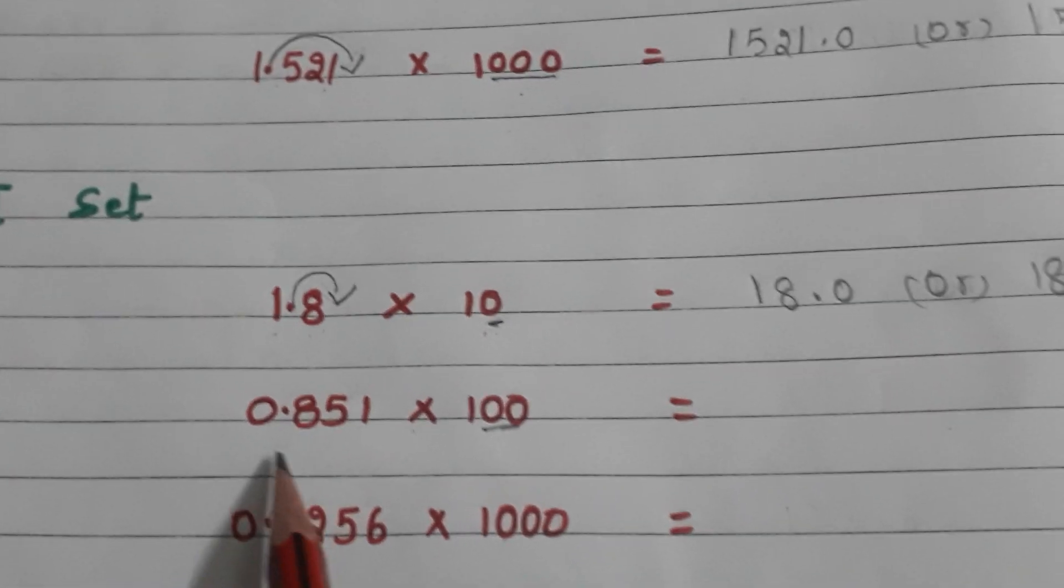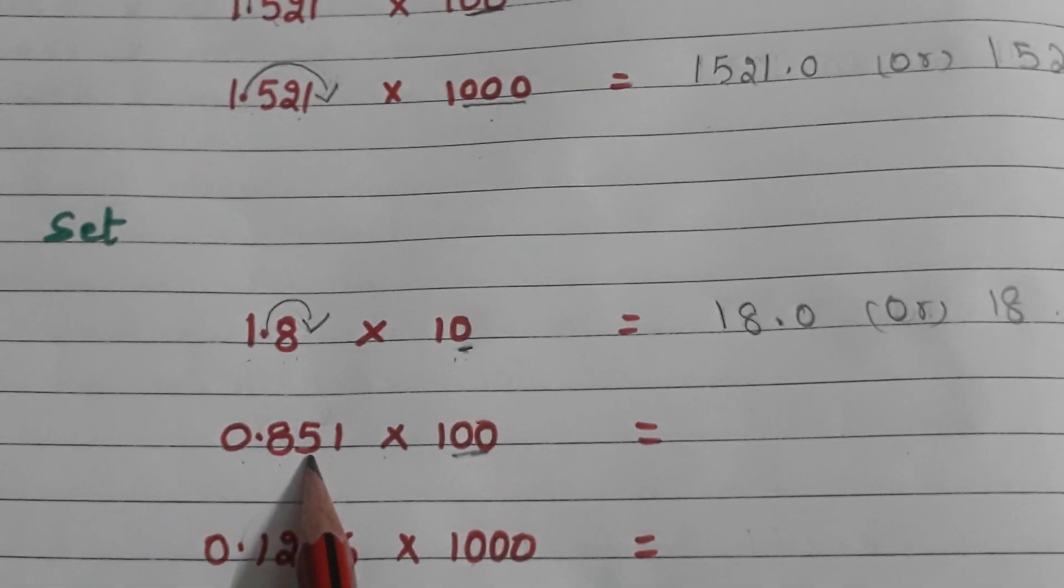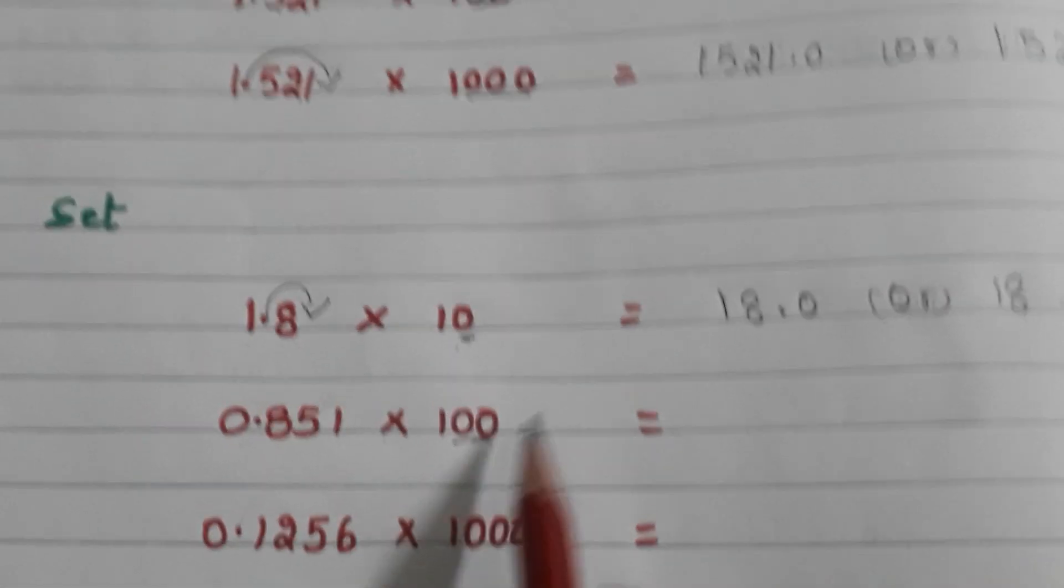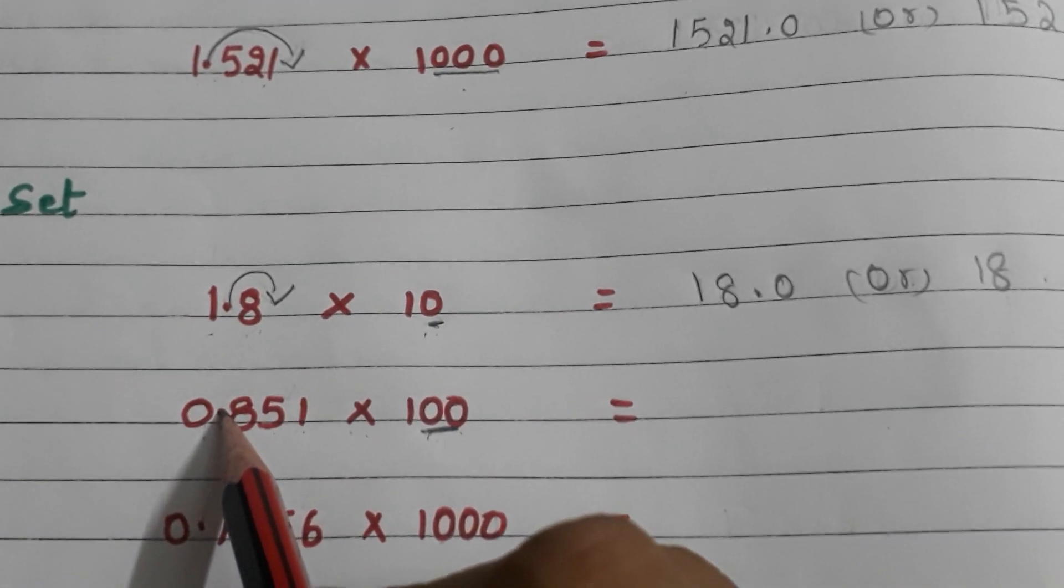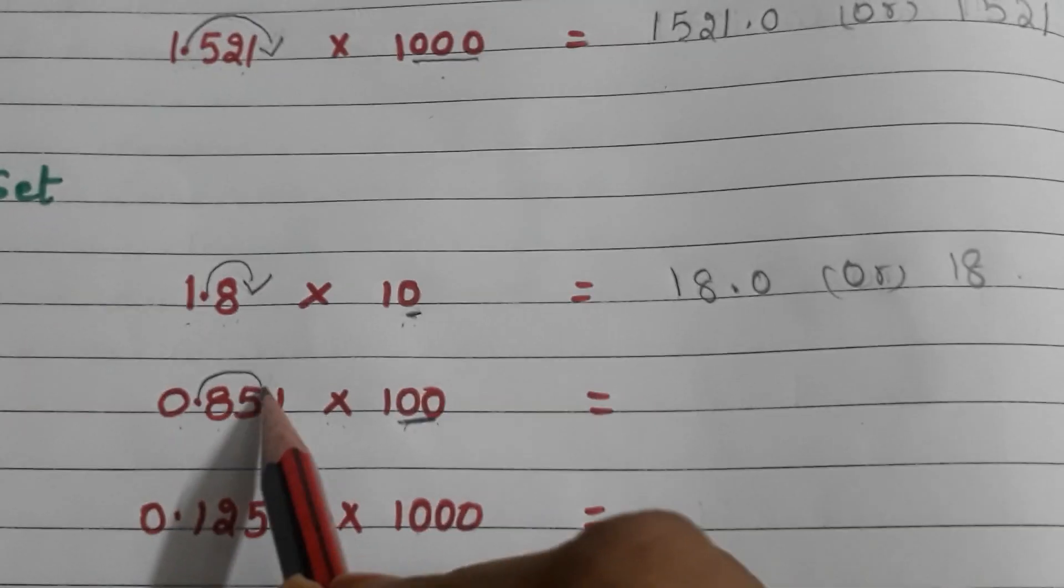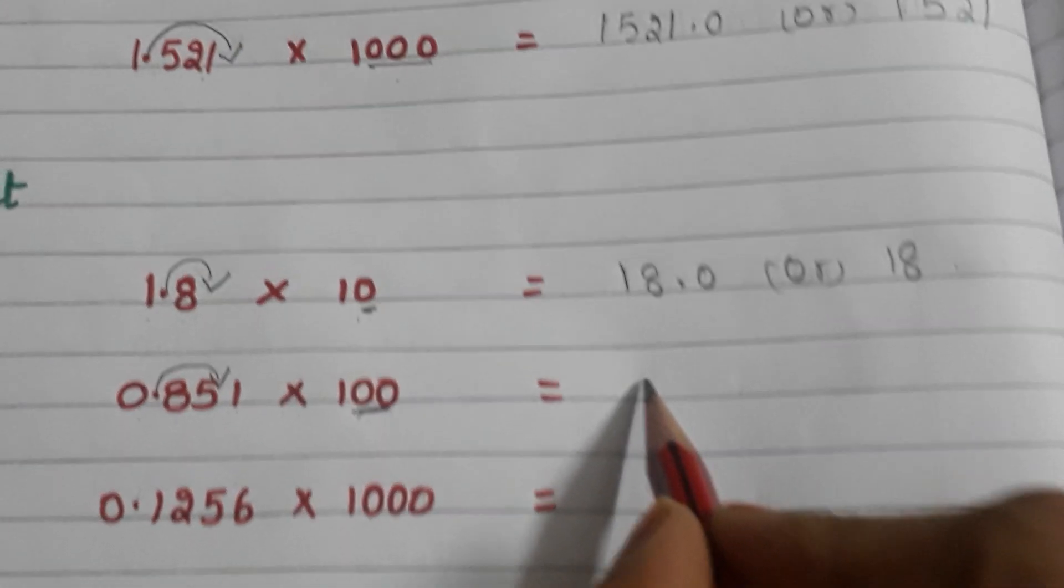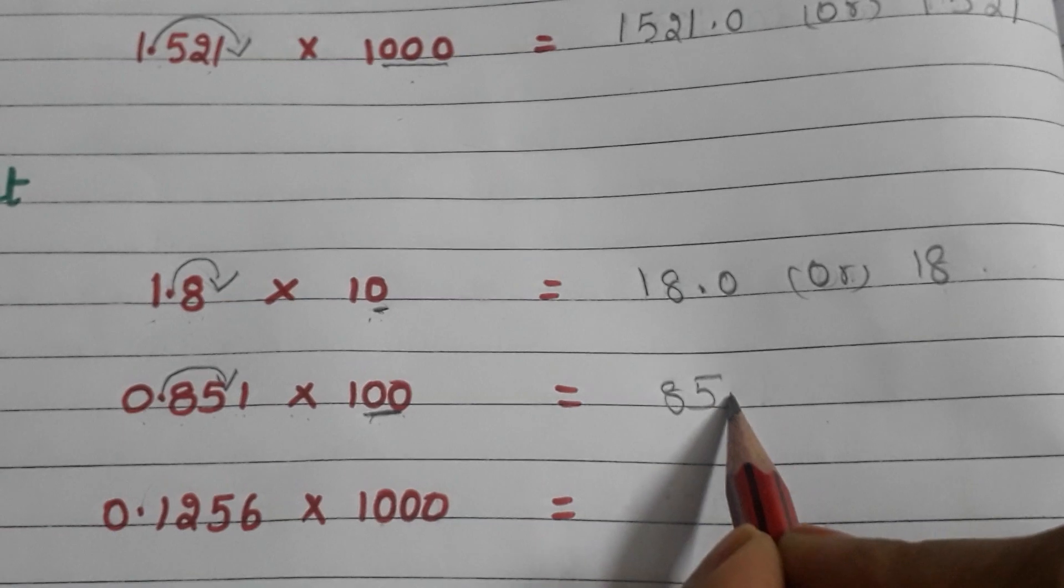Let us go to another decimal. 0.851 into 100. In 100 how many zeros are there? Two zeros. So I am moving the decimal point by two places to the right side. The answer will be 85.1.